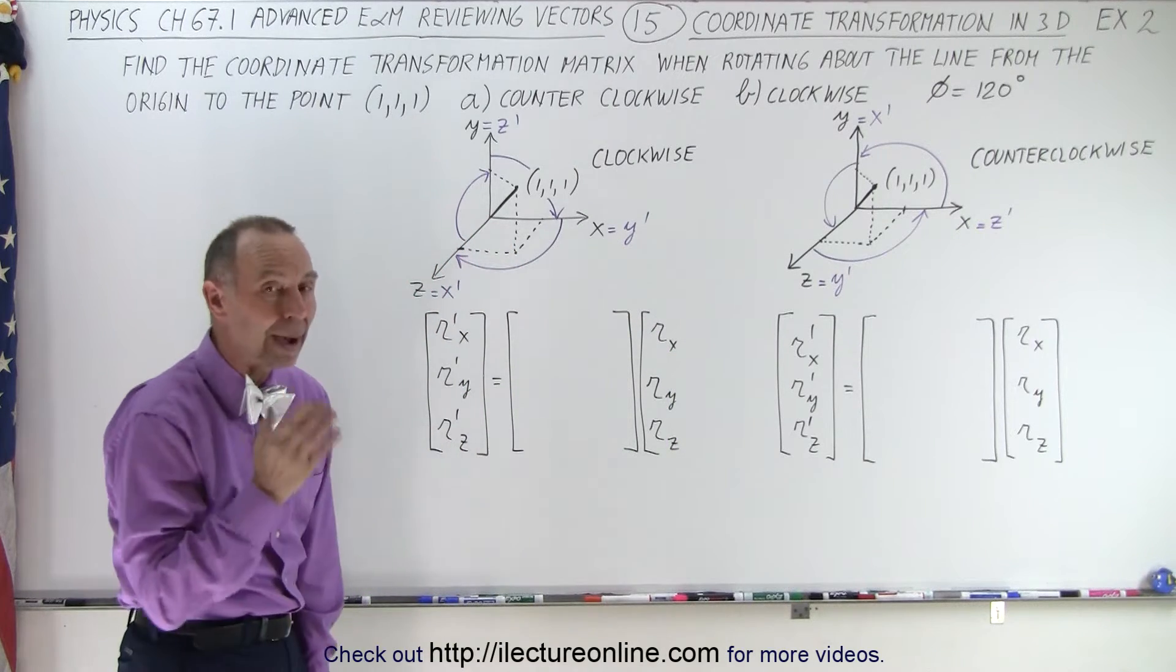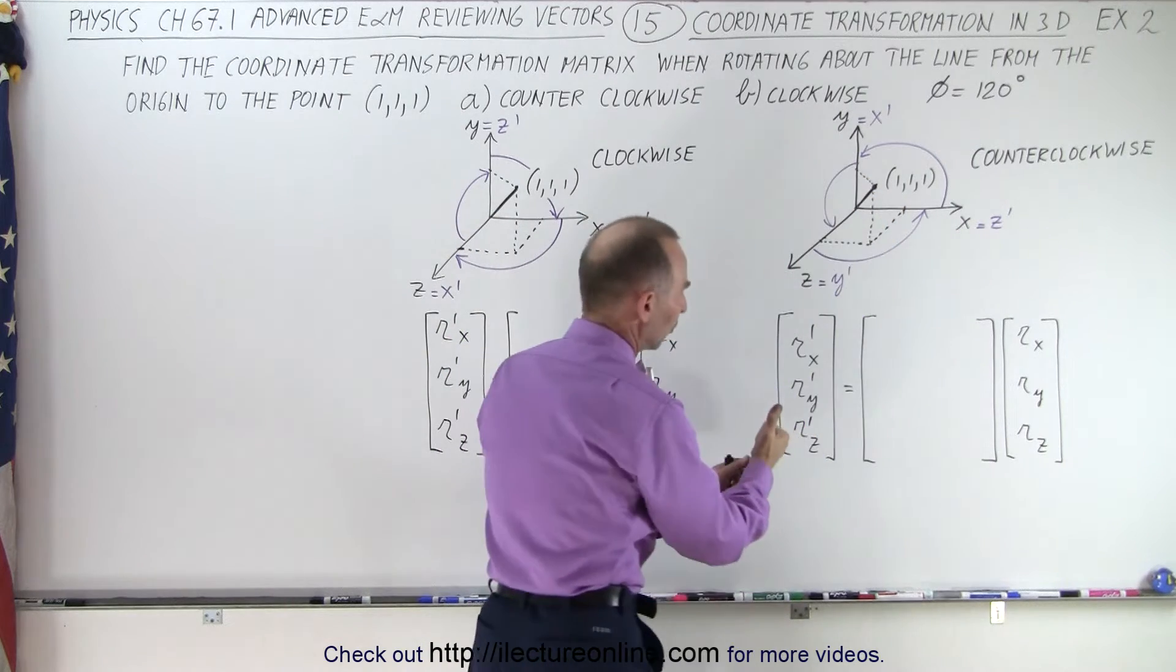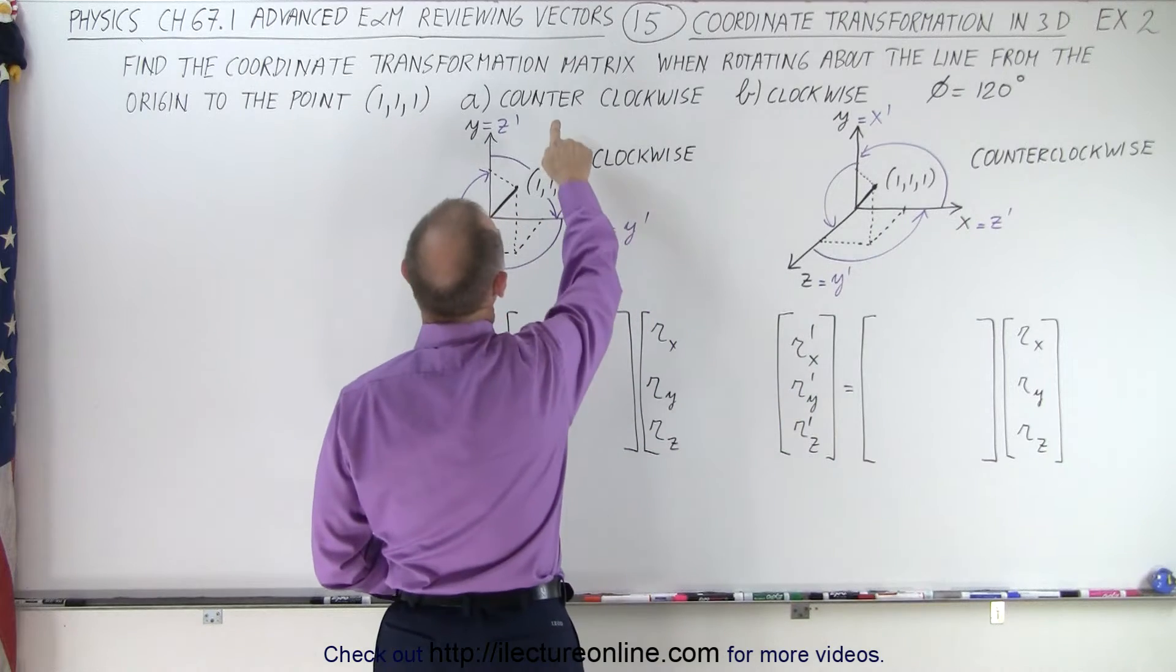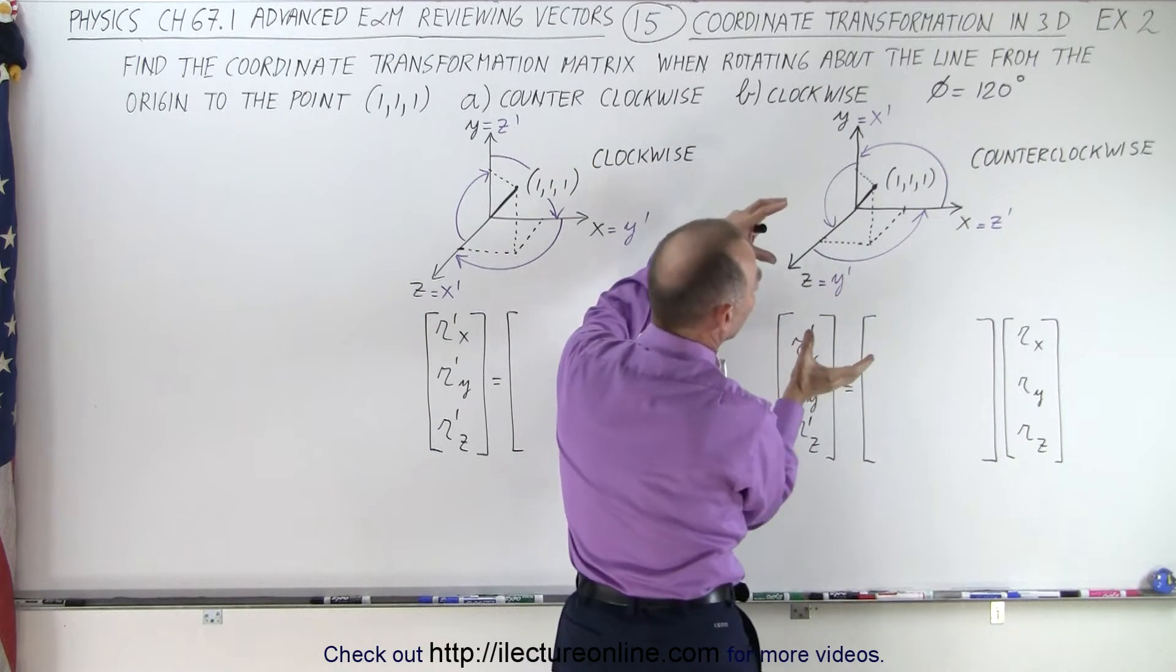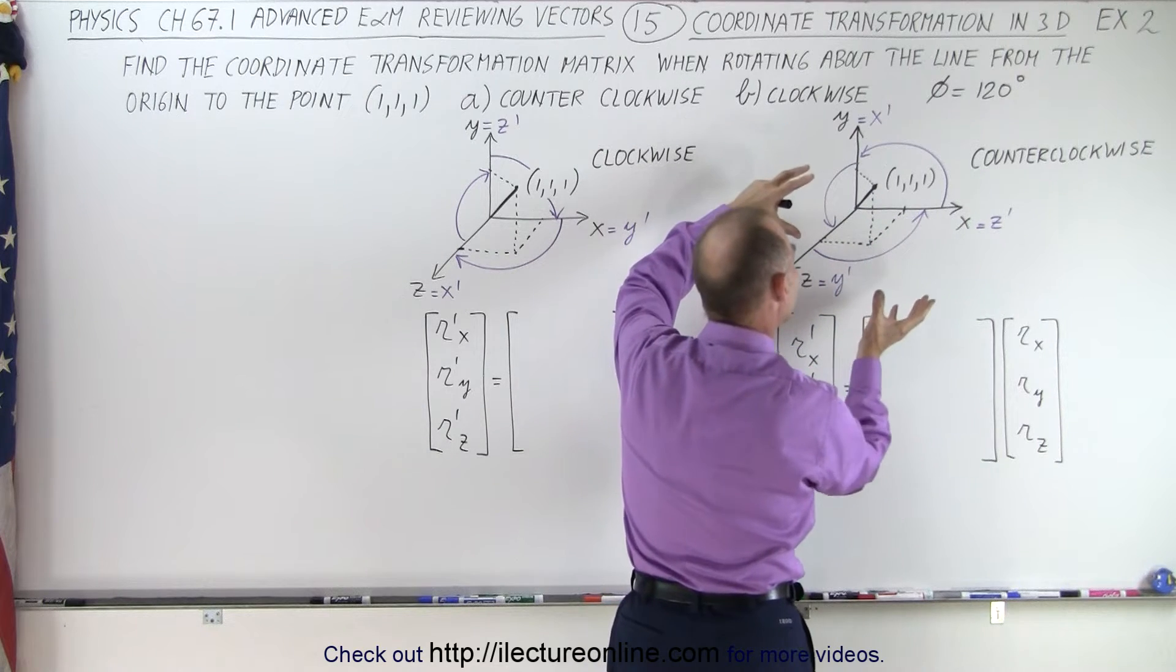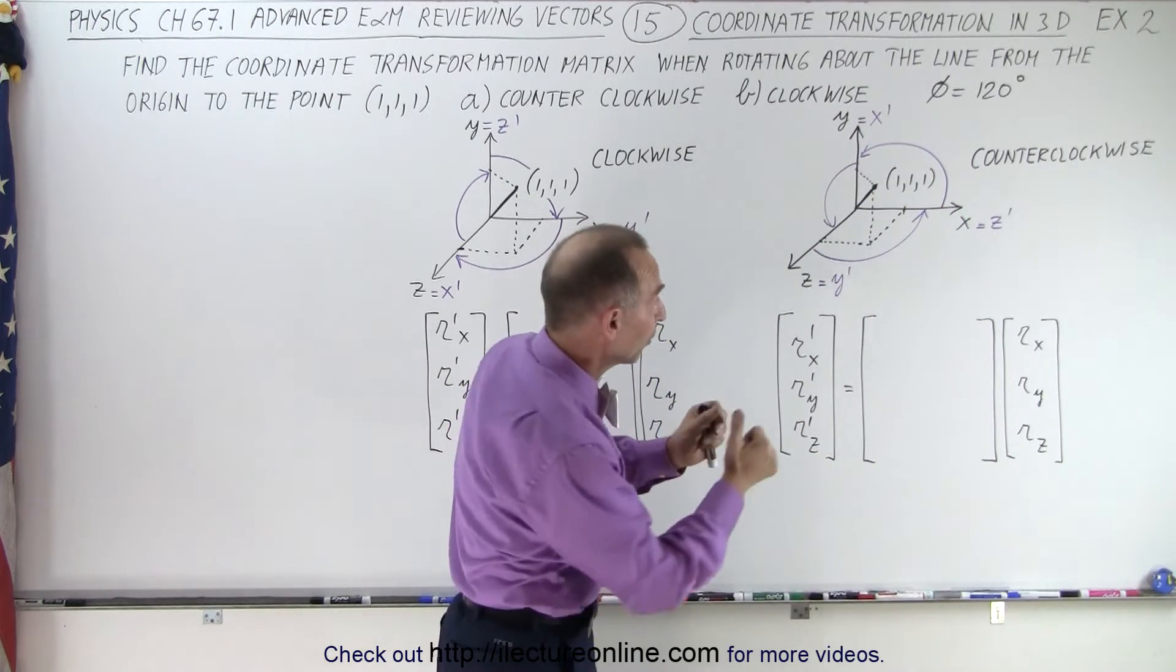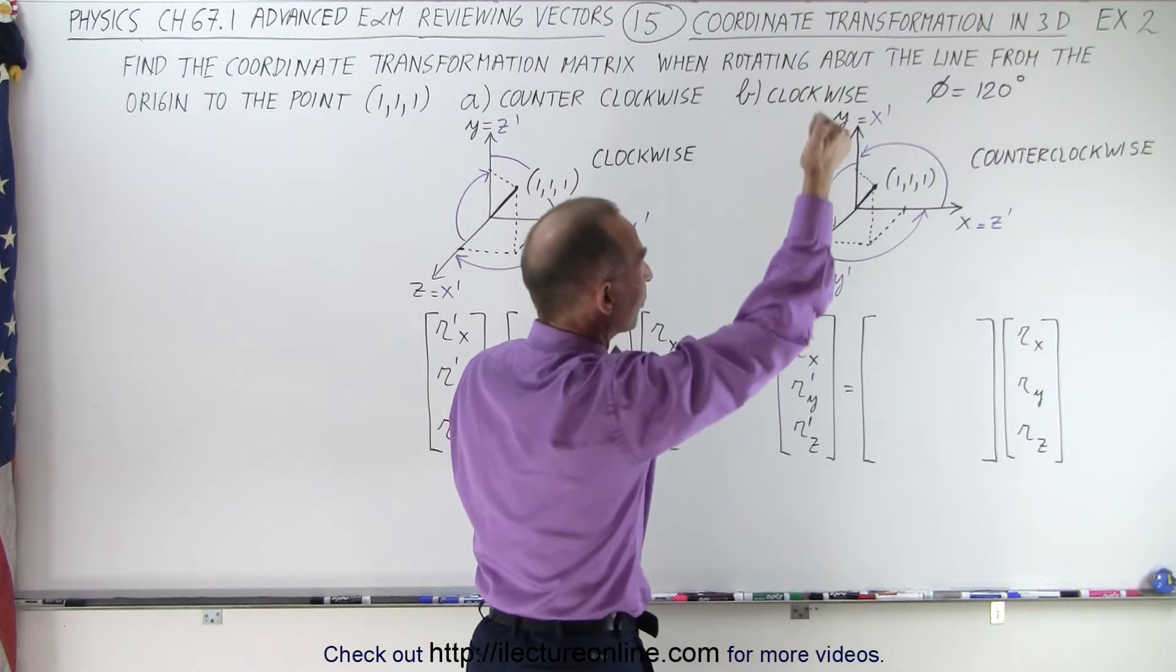We're going to rotate about the line from the origin to the point 111. So it sticks out at an angle. In the first time, we're going to go counterclockwise. That's an example right here. So we take the whole XYZ axis and we rotate them 120 degrees.